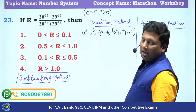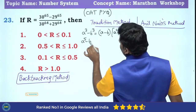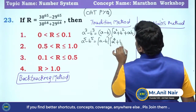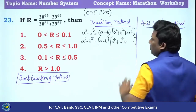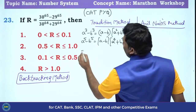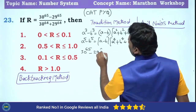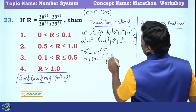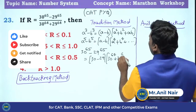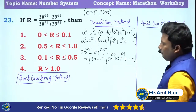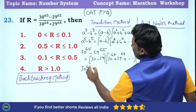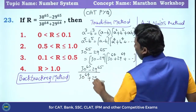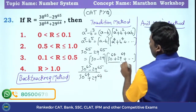Similarly, A power 5 minus B power 5 will be A minus B into A power 4 plus B power 4 plus some positive value. So similarly, 30 power 65 minus 29 power 65 equals 30 minus 29, into 30 power 64 plus 29 power 64 plus some positive value. So if I divide 30 power 65 minus 29 power 65 by 30 power 64 plus 29 power 64...